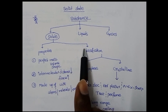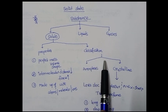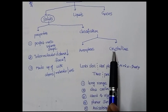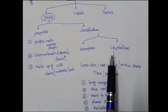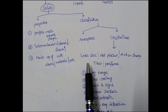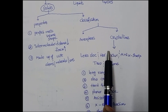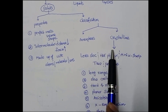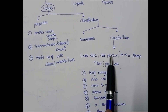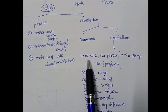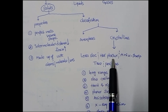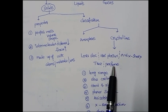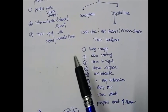The classification of solids: solids are mainly classified into two types — amorphous and crystalline. From an entrance exam point of view, they mainly ask about properties of crystalline and amorphous solids. Here is a shortcut to remember: 'Laura's look her pleasure — anix sharp true perfume.' We will discuss each point one by one.